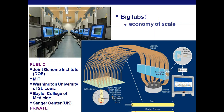Really big labs can do this on a huge scale, saving money. This was also pursued by the Department of Energy's Joint Genome Institute, MIT, Washington University in St. Louis — a great location if you're considering colleges — Baylor College of Medicine in Houston, Texas, the Sanger Center in the UK, and Celera Genomics, which we'll be talking about shortly. All of these use these methods.